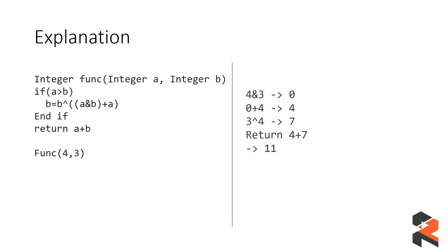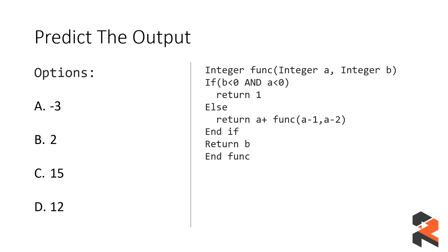Let's look at another question. Here you are given a function and you are going to pass the values 1 and 1 into it. You have to predict the output. In many pseudo code problems the pseudo code is given and statements explain what to do inside the function, so the values 1 and 1 are mentioned in the problem statement rather than directly in the code. Pause the video and give it a try on your own first.